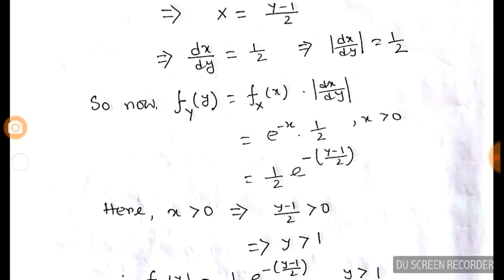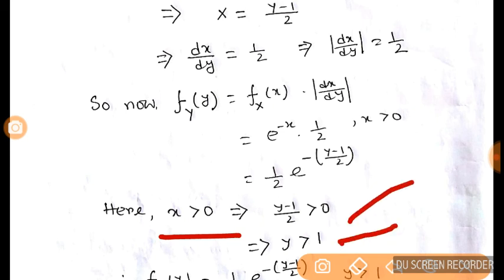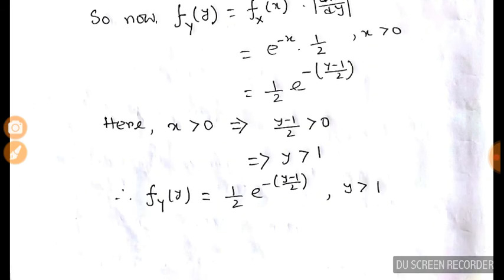Now we find the range. If X greater than 0, this implies (Y - 1)/2 is also greater than 0, and we get Y greater than 1.